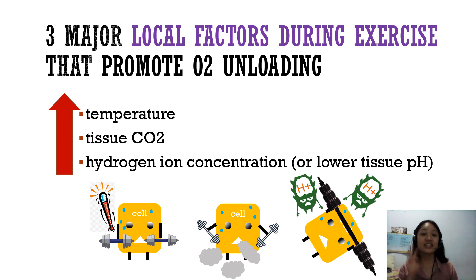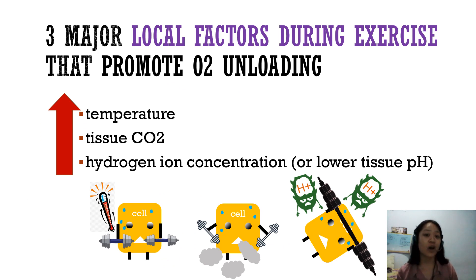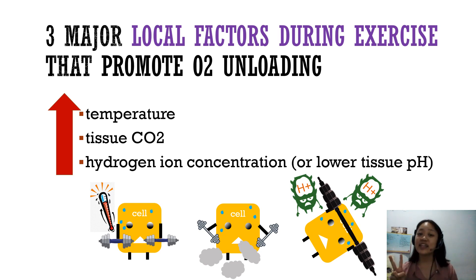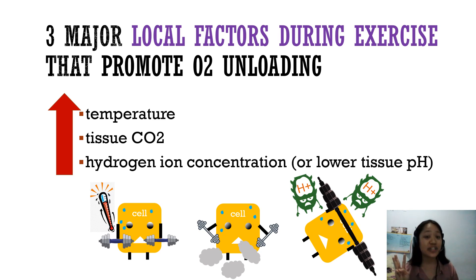The three major local factors during exercise that promote unloading of oxygen from hemoglobin to the cells are: an increase in temperature, an increase in tissue carbon dioxide, and an increase in hydrogen ion concentration, or lower tissue pH.